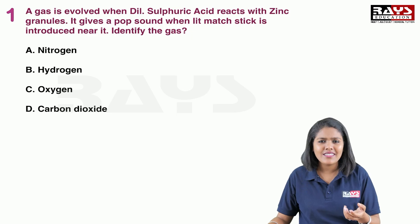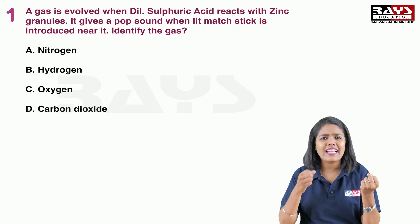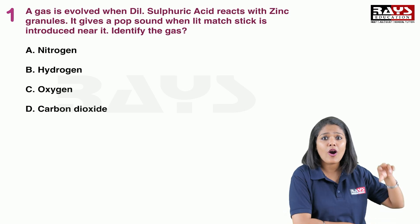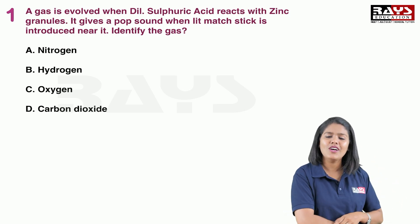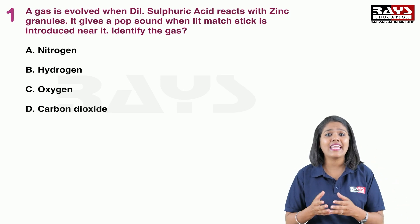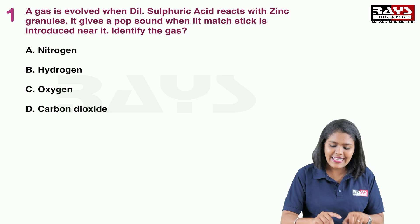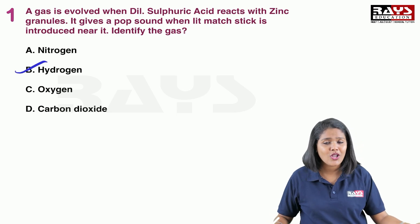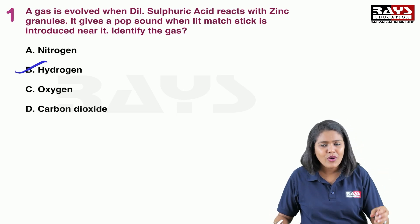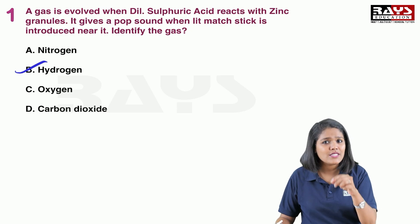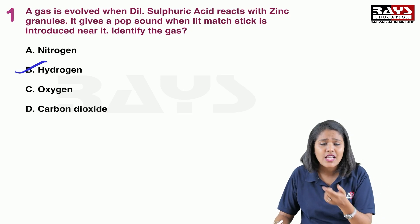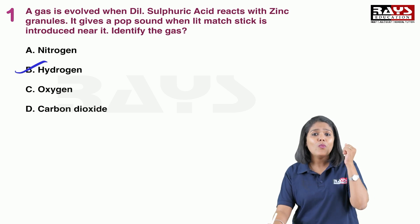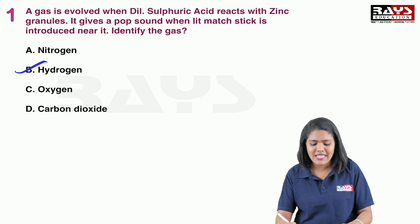Before moving to the right answer, just tell me: when a metal reacts with acid, what are the products formed? We can see that two products are obtained — one is a metal salt and the second is a gas. The gas produced is hydrogen gas, because whenever a metal reacts with an acid, the gas produced is hydrogen gas.